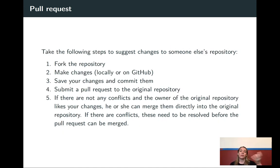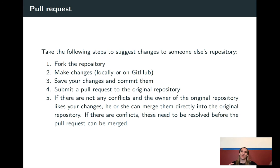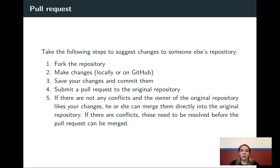If you're doing a pull request, you fork somebody else's repository, make changes in that copy — which doesn't affect their original — then once you've made all those changes, save them, commit them, and submit a pull request back to the original repository. The owner can then decide whether or not to bring that into the main branch.